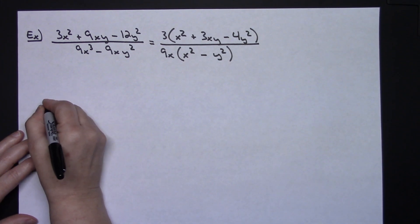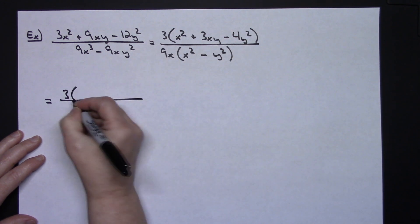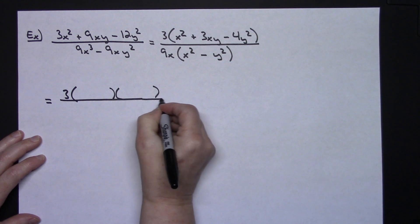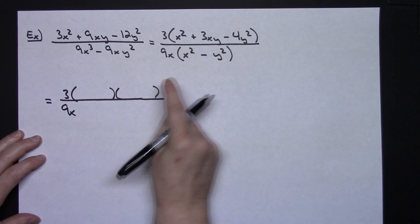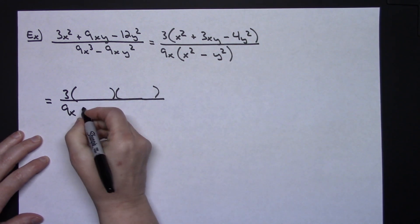Okay so I think I'm going to come down here to continue this. The 3 I'm just going to keep right now. I know this is going to factor into two binomials. My 9x is going to stay.